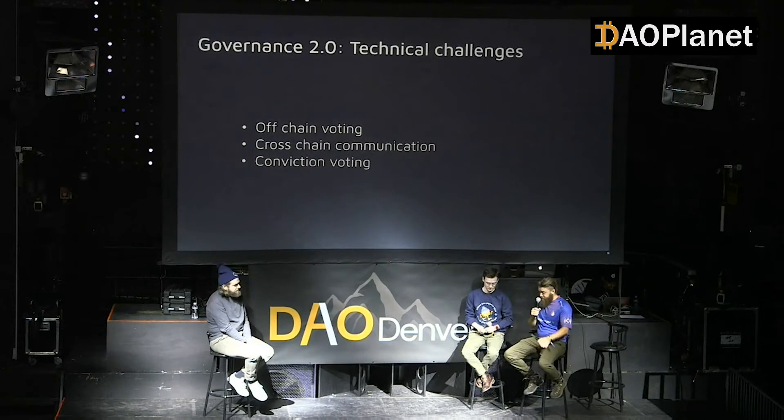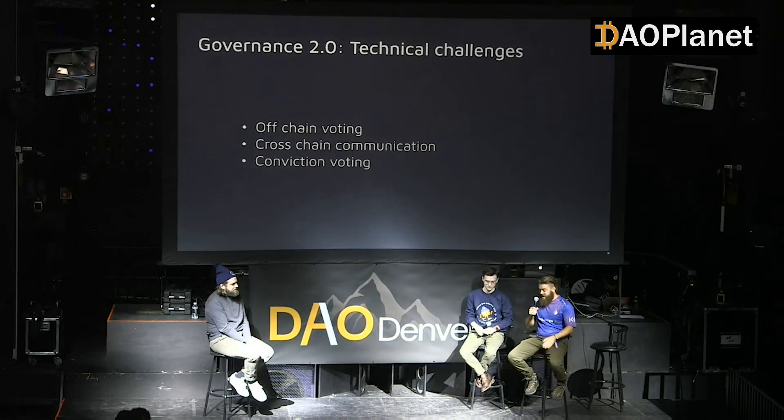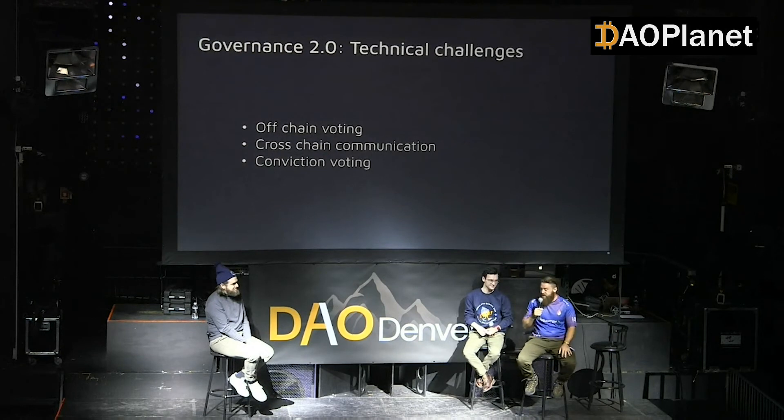The biggest challenge right now is cross-chain communication. We are trying to make voting cheaper and as easy for voters as possible, because when you enter the DAO and see everything — the reputation, DXD, how it all works — it's going to be very overwhelming for a new user. Conviction voting is something I'm very interested in and eager to start working on soon — it's a great tool we want to start experimenting with.